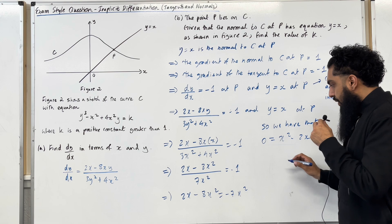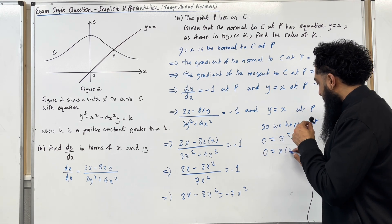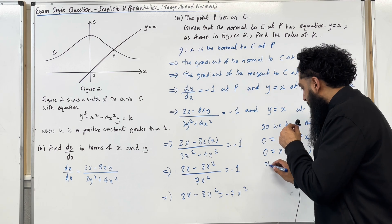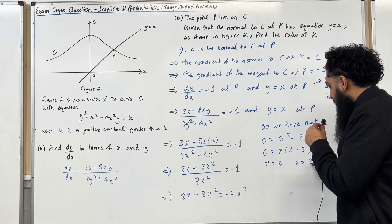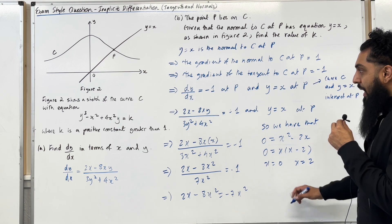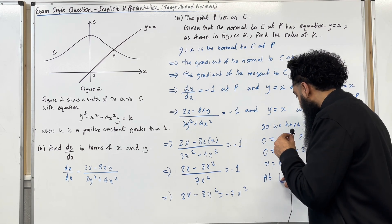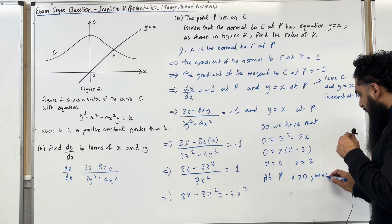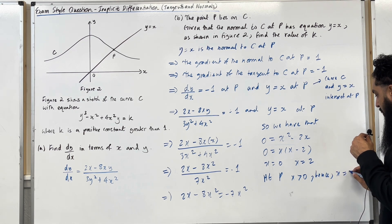Solve this via factorization. Work out the two solutions. These are x equal 0, x equal 2. Now at P, x is more than 0. Hence, we must accept x equal 2.